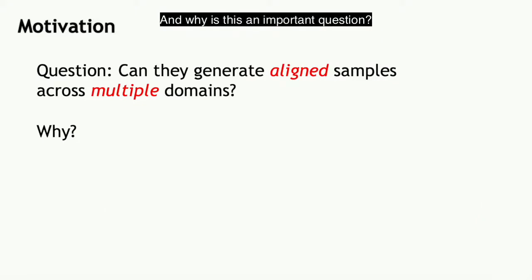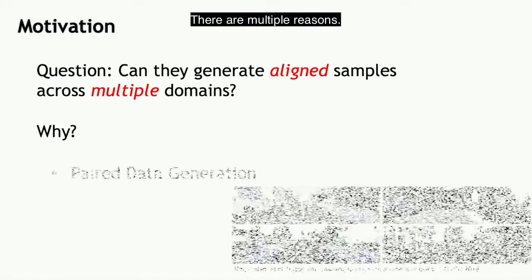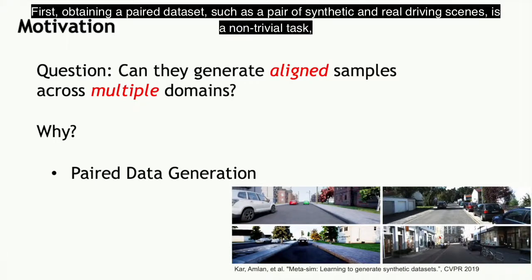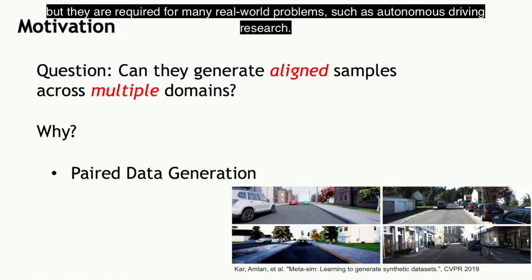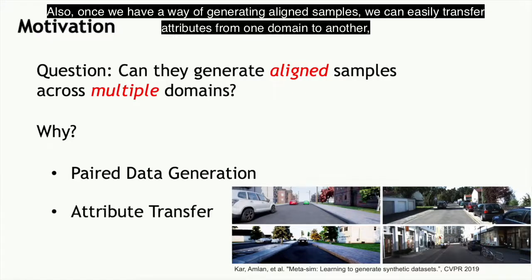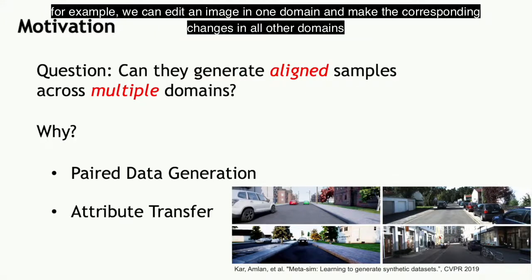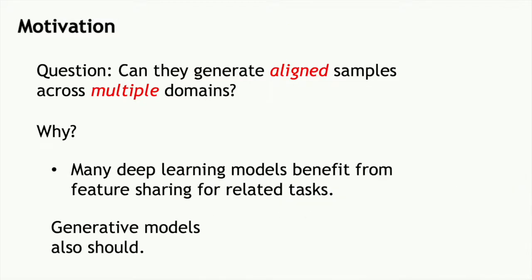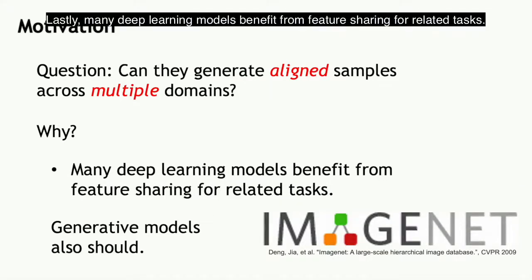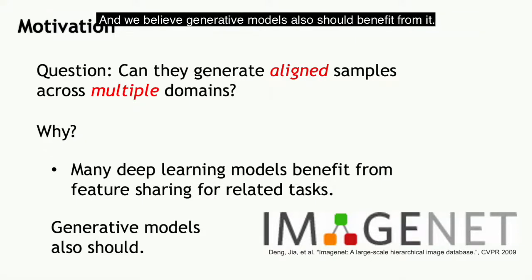And why is this an important question? There are multiple reasons. First, obtaining a paired dataset such as a pair of synthetic and real driving scenes is a non-trivial task, but they are required for many real-world problems such as autonomous driving research. Also, once we have a way of generating aligned samples, we can easily transfer attributes from one domain to another — for example, we can edit an image in one domain and make the corresponding changes in all other domains. Lastly, many deep learning models benefit from feature sharing for related tasks, and we believe generative models should also benefit from it.